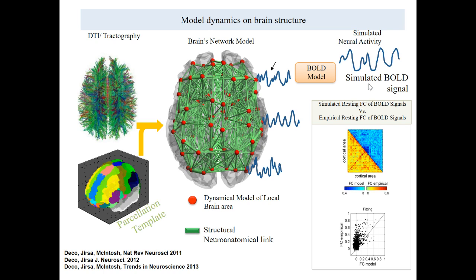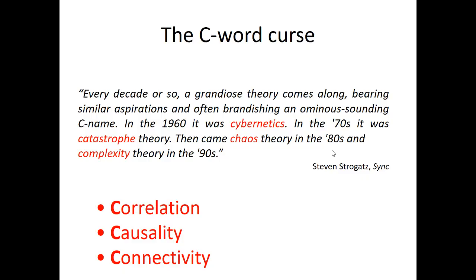The next lecture will be about large-scale modeling — a natural consequence of connectivity. Once we have structural connectivity, we can build a model of the brain using this architectural network and compare it with empirical functional connectivity. As a closing thought, this is a quote from Steven Strogatz about the 'C-word curse': every decade, a grandiose theory comes along with an ominous-sounding C-name — cybernetics in the 60s, catastrophe theory in the 70s, chaos theory in the 80s, complexity in the 90s. Now we have correlation, causality, and connectivity as the new C-word. Thanks.